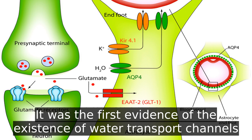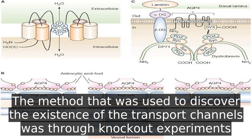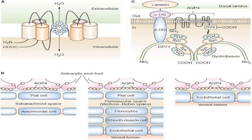Aquaporin 4 was first identified in 1986. It was the first evidence of the existence of water transport channels. The method used to discover these transport channels was through knockout experiments, which showed the significant role of AQP4 in CNS injuries and brain water imbalances.